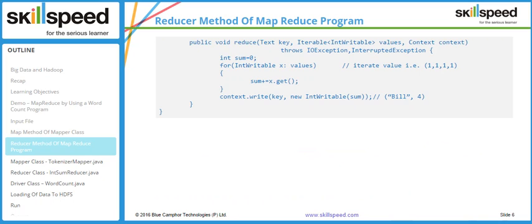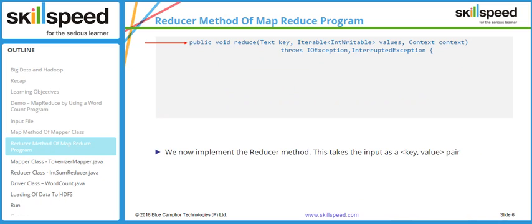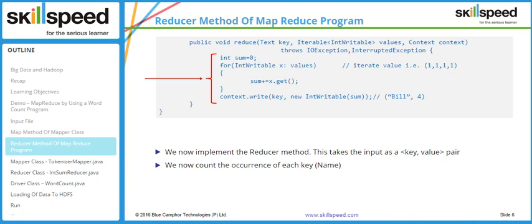This is the reducer class, shown by arrow number one. It extends the standard reducer class. Arrow number two shows the reducer logic. The reduce method takes input as a key-value pair from the shuffle and sort phase — the key is of Text type and the value is IntWritable. For example, the key 'Bill' would have values 1,1,1,1.